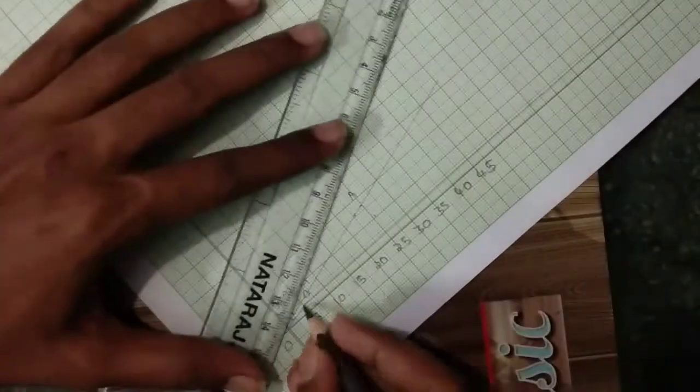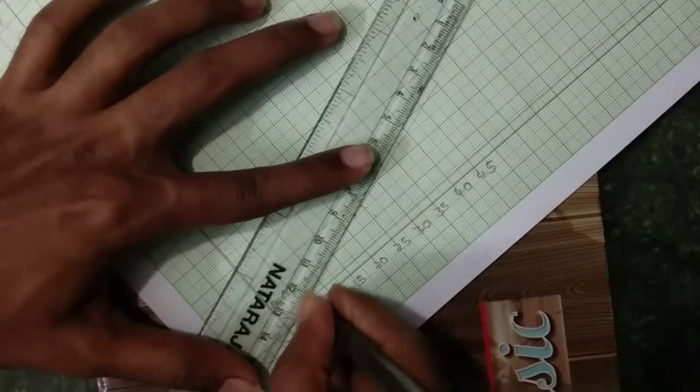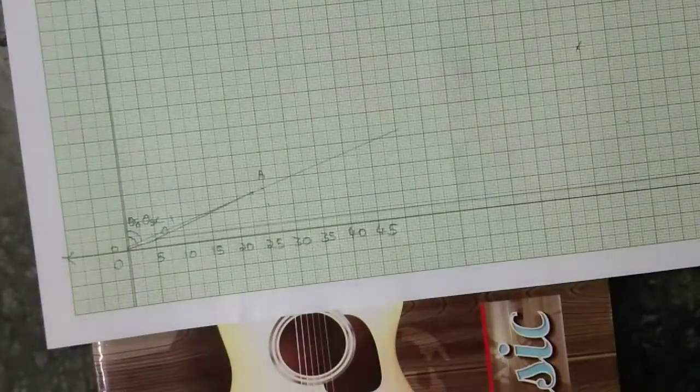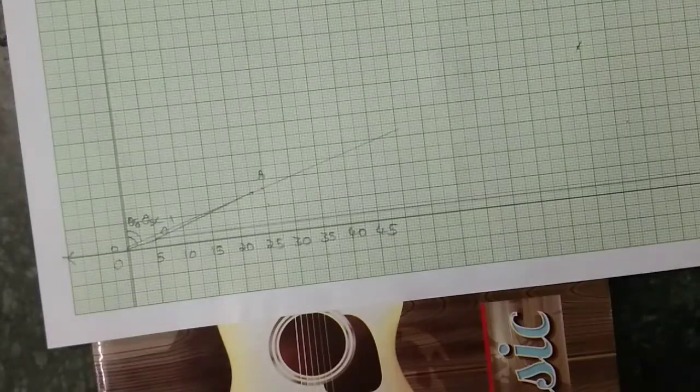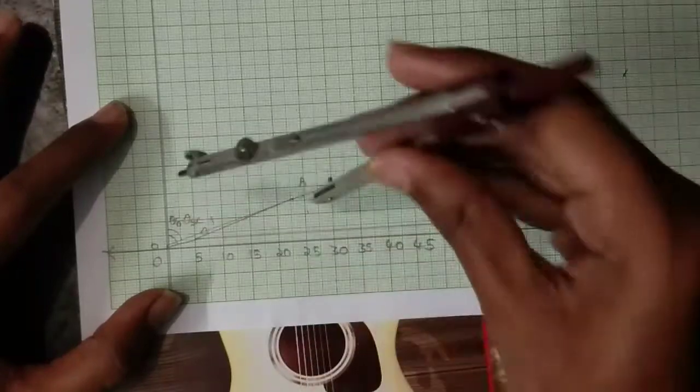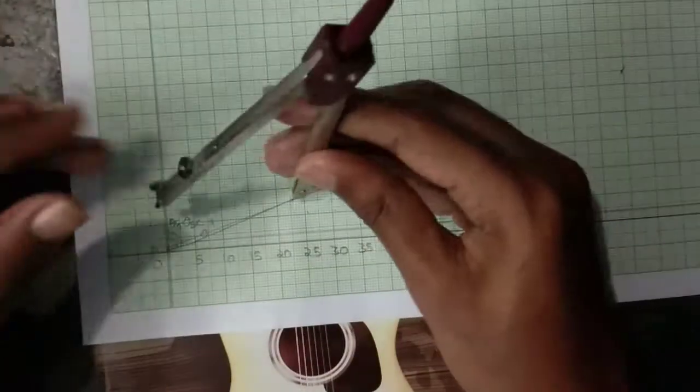Now I am joining O' and A. Now I am joining a perpendicular bisector for O' and A. Take more than half.